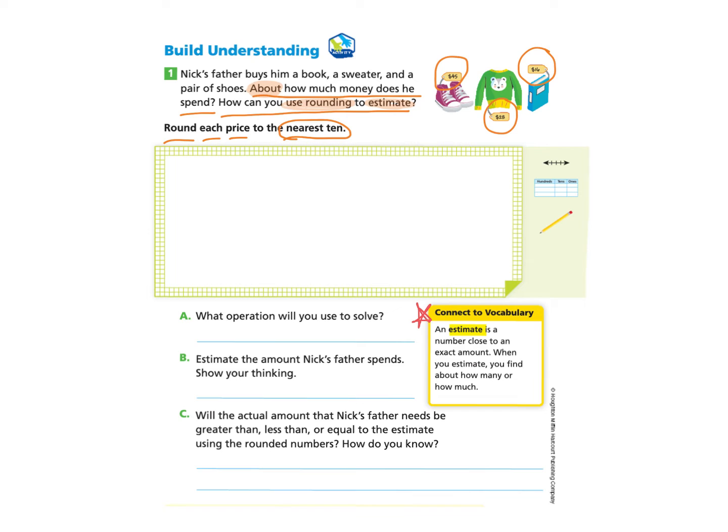Let's look at the connective vocabulary. An estimate is a number close to an exact amount. When you estimate, you will find about how many or how much. So our first step would be to round each price to the nearest 10. My plan is to make a number line for each number.